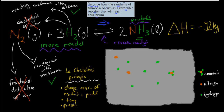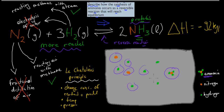One of the problems with this reaction reaching equilibrium is that at some stage there's going to be a point where no further ammonia will be produced. For example, if this is the equilibrium, we might have one mole of ammonia, two moles of nitrogen, and six moles of hydrogen gas — and it will stay like that, it won't change. But we don't want it to stay still; we want it to keep producing more and more ammonia. So we need to find some way to break this equilibrium.